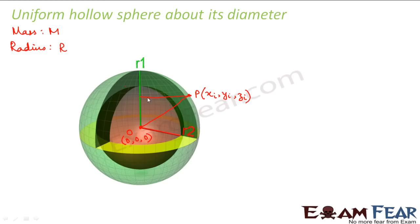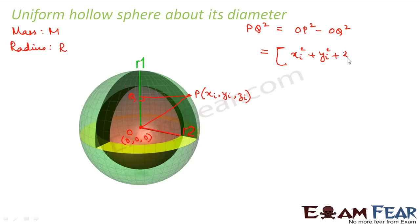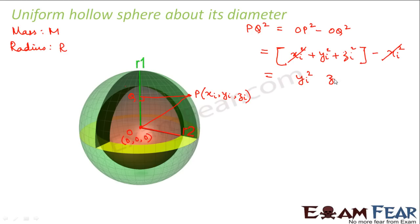Now if I draw a perpendicular to the axis of the sphere and join it to point Q, we can say that PQ² = OP² − OQ² as per Pythagoras theorem. OP² is nothing but xi² + yi² + zi². OQ² is nothing but xi², because the y and z components will be 0. So xi² and xi² get cancelled, giving PQ² = yi² + zi².